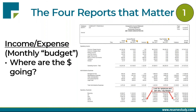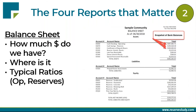Next is the balance sheet — a snapshot at a point in time showing how much money you have and where your liabilities are. You'll see your operating account, reserve accounts — which can be broken out by project, such as the roof account or roads account — delinquencies, and any unpaid bills. One thing to note: has anything significantly changed over the last month? For example, if you're down twenty thousand dollars in your operating account, that's something to investigate.